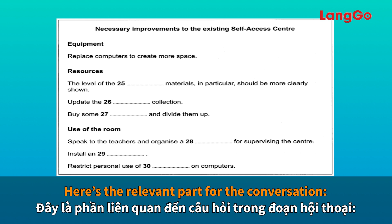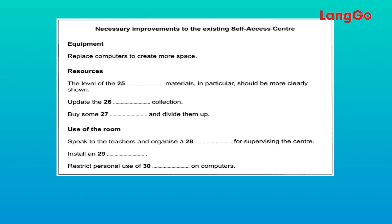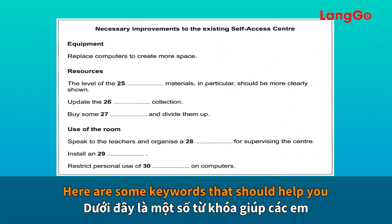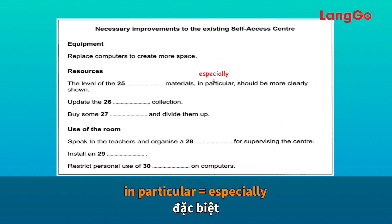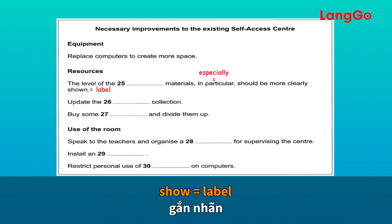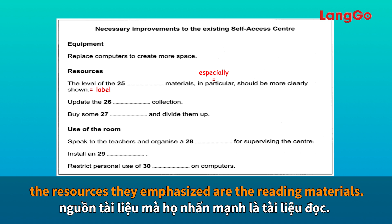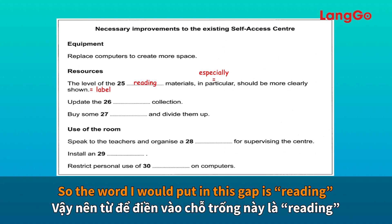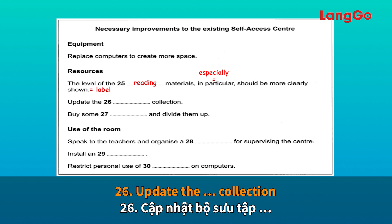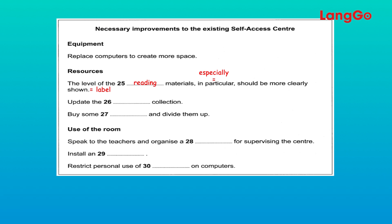Number 25: the level of materials in particular should be more clearly shown. Students frequently say that they find it difficult to find materials appropriate for their level, especially reading resources, so they need to label them more clearly. Key words here are 'in particular' and 'especially,' and 'show' and 'label' acting as synonyms. The resources students emphasize are reading materials, so the word to put in this gap is 'reading.'